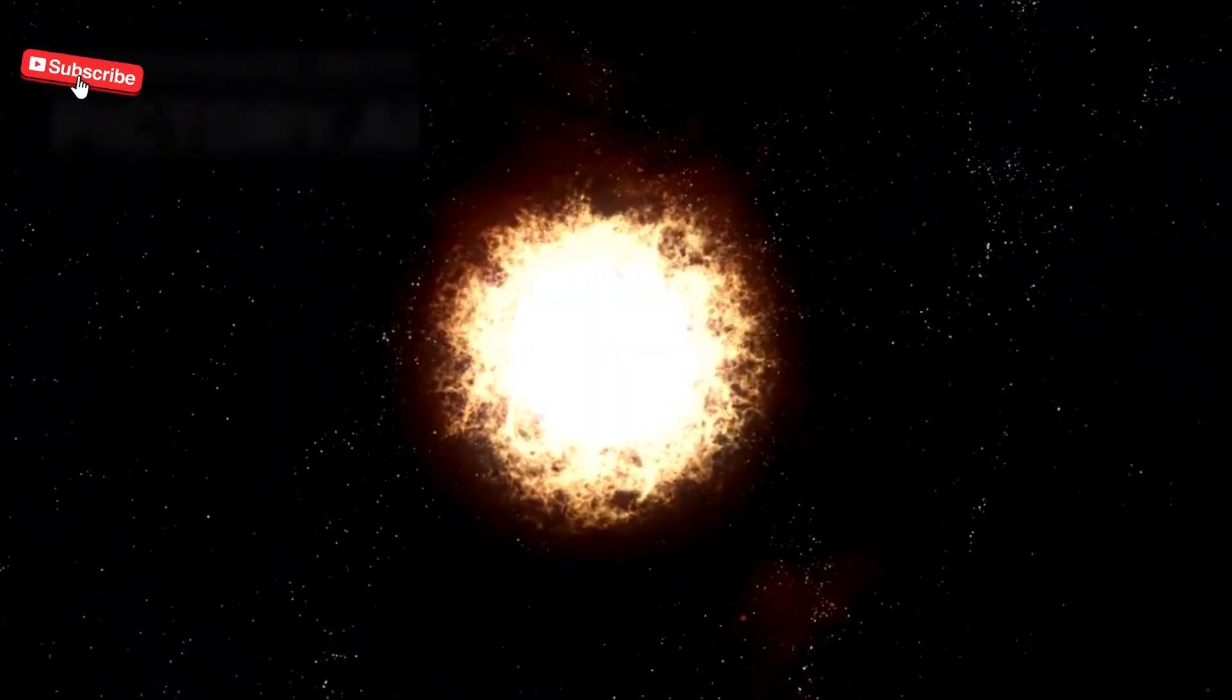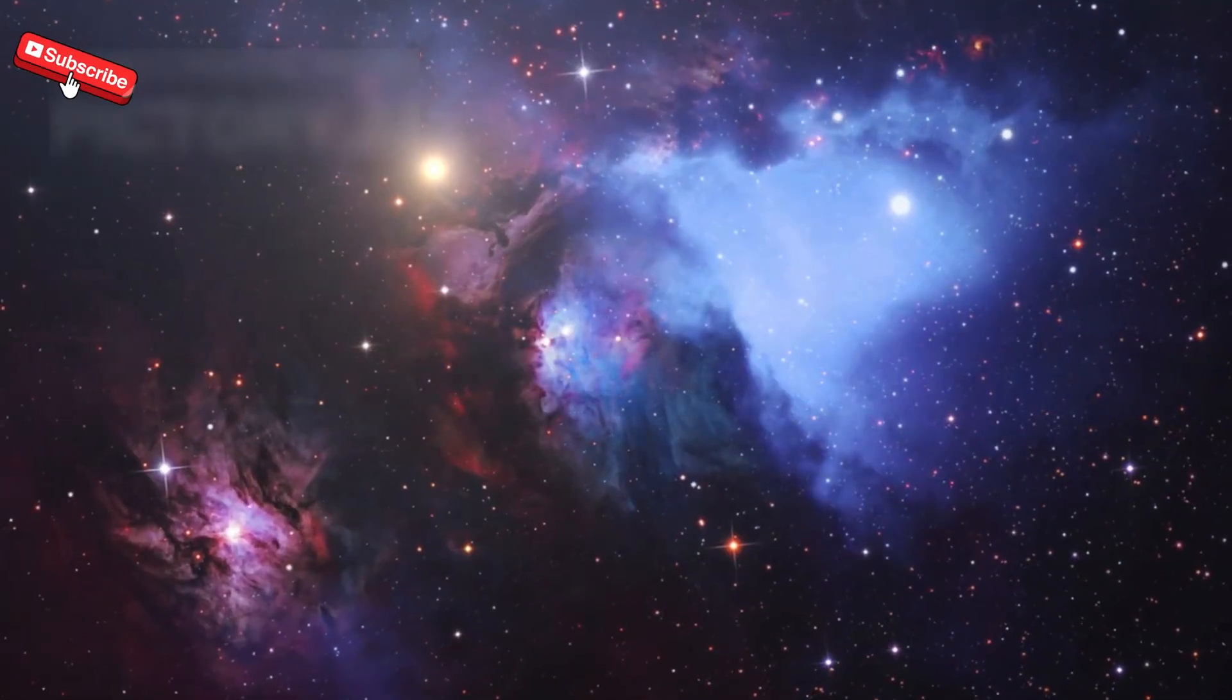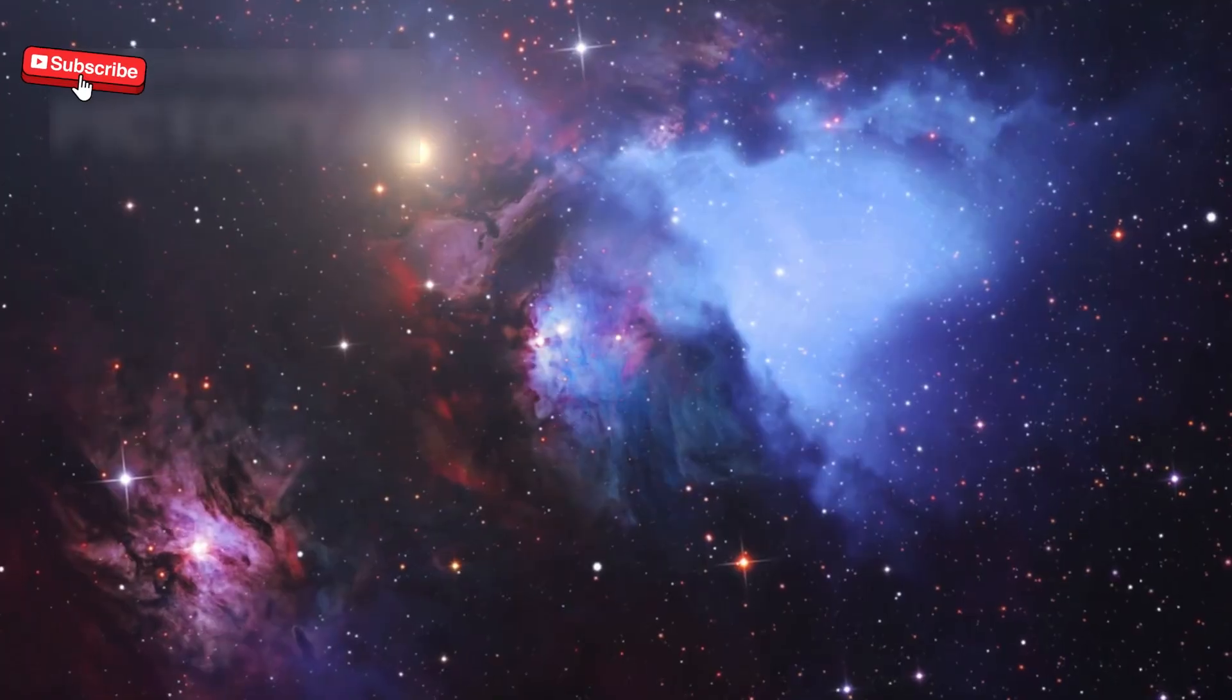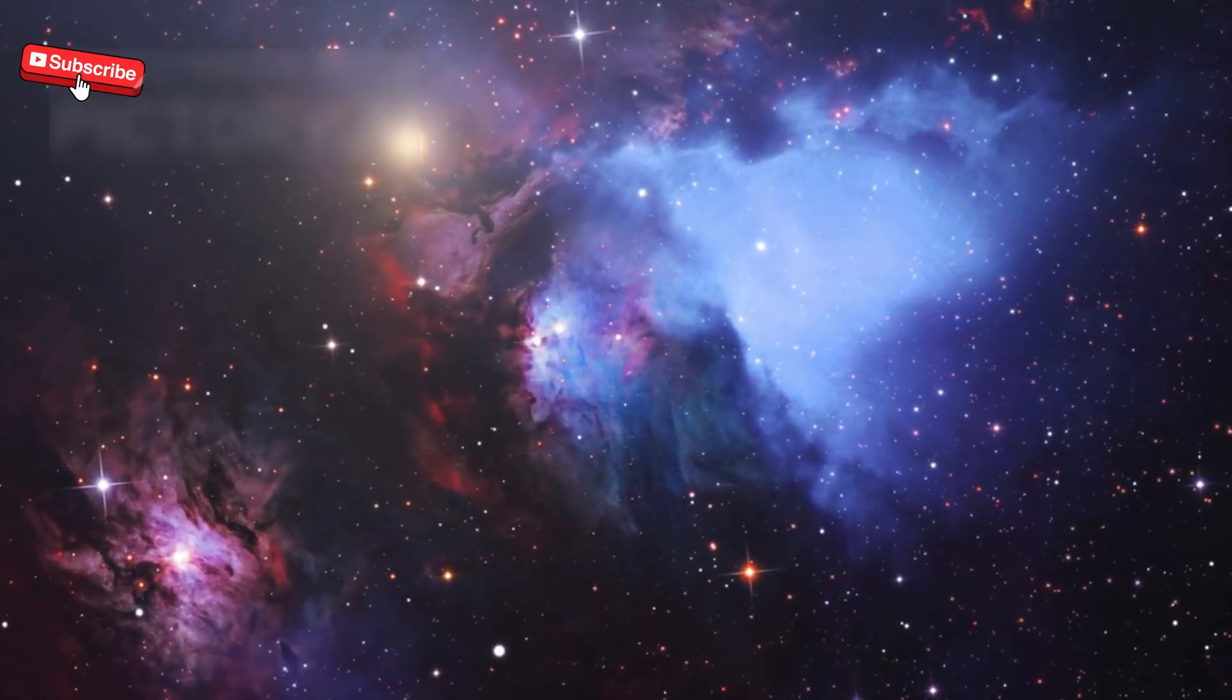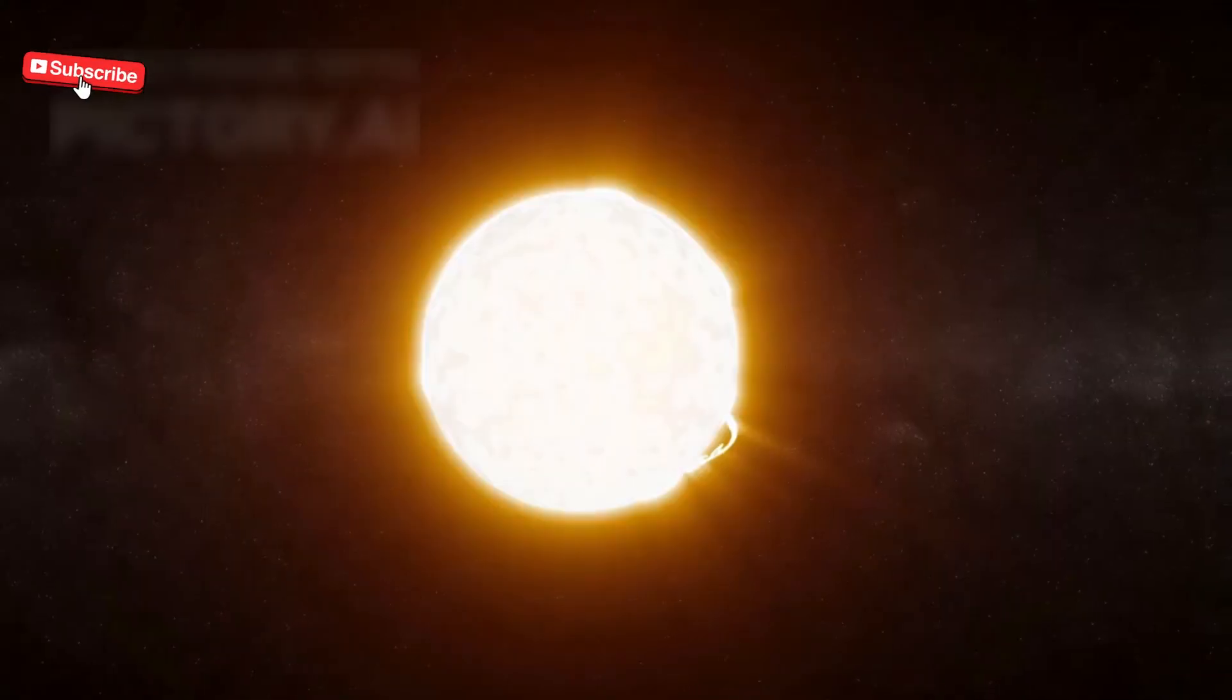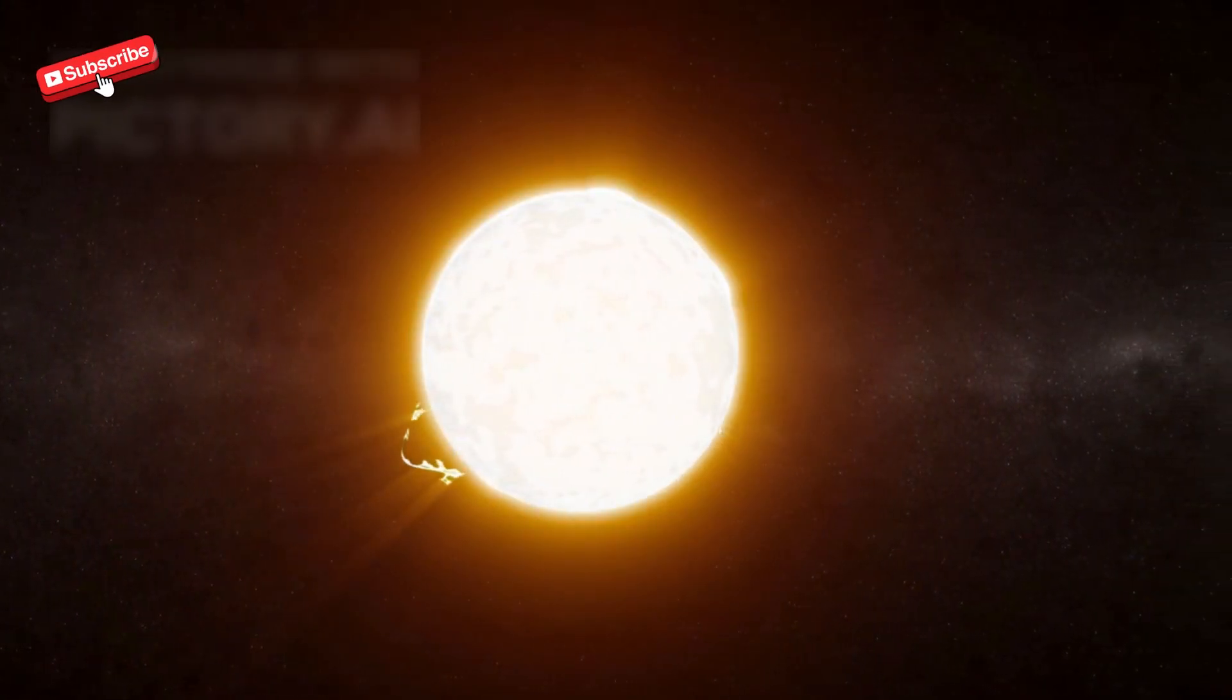Being a red supergiant, Betelgeuse has a massive and turbulent outer layer. Observations from NASA's Hubble Space Telescope and other ground-based instruments have shown huge gas bubbles moving across its surface. These movements look like giant waves and have been compared to a boiling pot of soup, with gas rising and falling chaotically. These surface changes may be one reason the star's brightness shifts so suddenly.